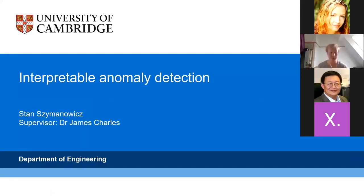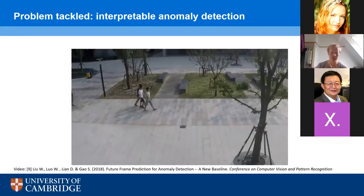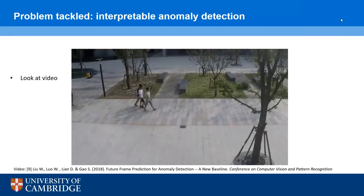Hi everyone, my name is Stan and I'll tell you about my master's project on Interpretable Anomaly Detection. The aim of the project is to look at video from CCTV cameras and spot anomalies — that is uncommon or unusual behaviours or objects — while automatically generating explanations of why they were found to be anomalous.